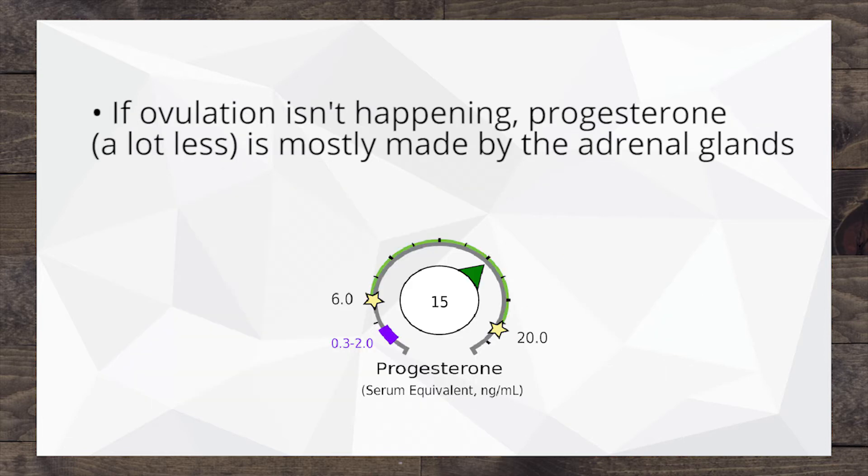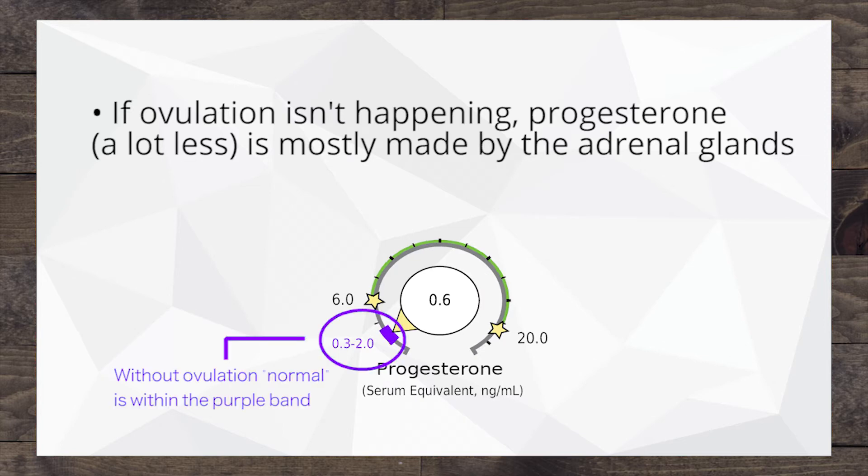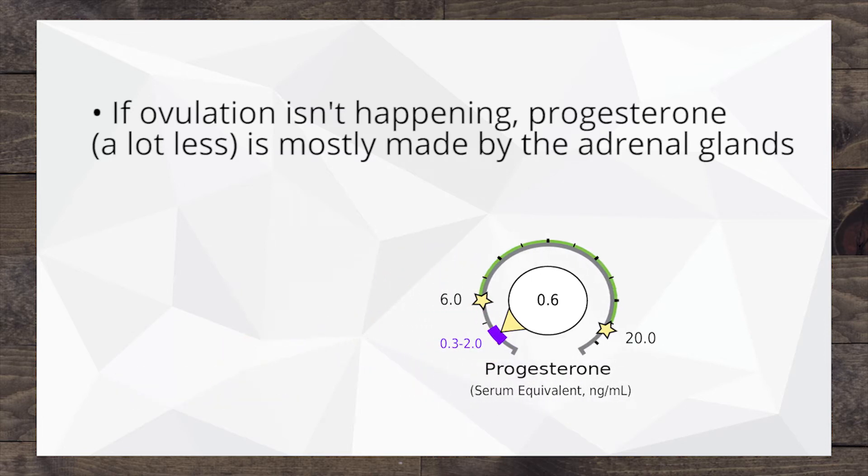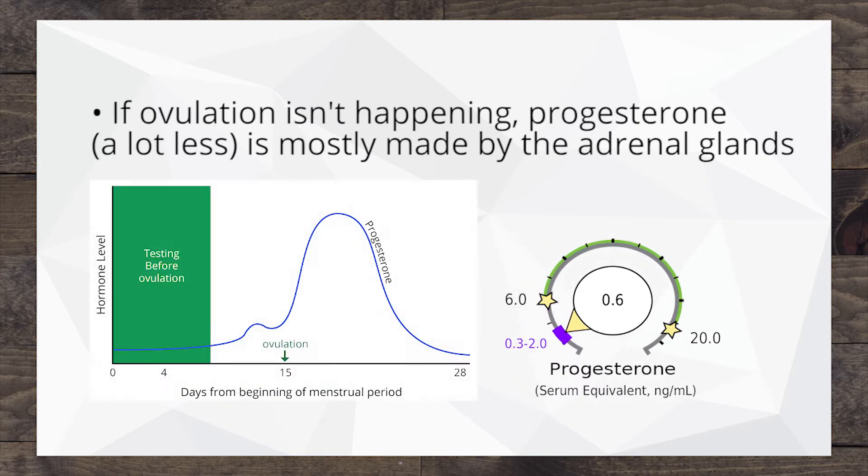As we get to women who are not cycling, say they're on birth control or they're past the menopausal phase, so they're postmenopausal, we expect to see their levels not up here because they're not ovulating. We expect to see them down in this little purple band once they're in that phase of life, because they're not ovulating. What's left is really just residual progesterone that's being made not by the ovaries but primarily from the adrenal glands.